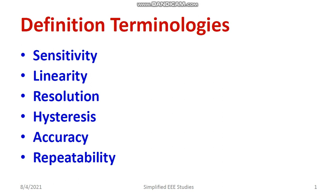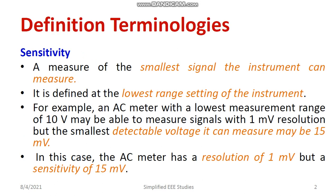Now let's understand what is sensitivity. Sensitivity is a measure of the smallest signal the instrument can measure, or you can call it the lowest range setting of the instrument. For example, consider a meter with a maximum range of 10 volts. The smallest detectable voltage it can measure may be 15 millivolts. So in this situation we call 15 millivolts the sensitivity of the device.